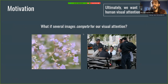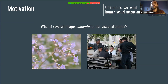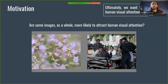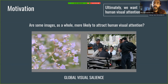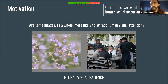But here we ask: what if several images compete for our visual attention? Are some images, as a whole, more likely to attract human visual attention? In other words, we are interested in finding out if natural images have an intrinsic global visual salience.